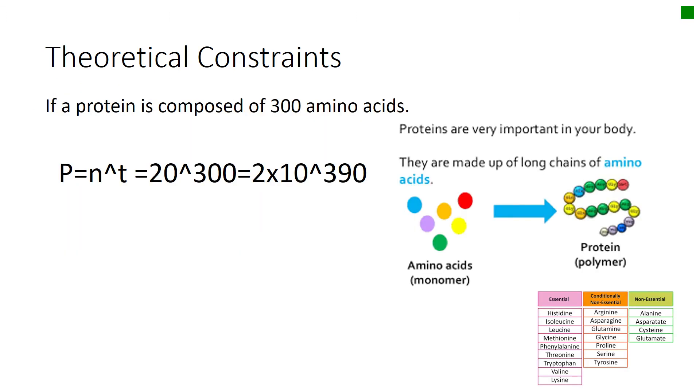If a protein is composed of 300 amino acids, then using permutations, we can say that the 300 amino acids can be combined in many different ways.